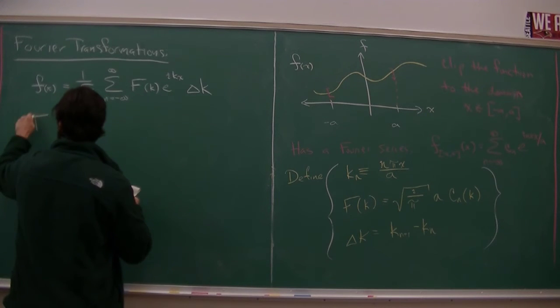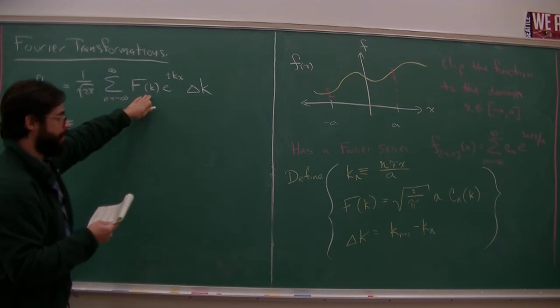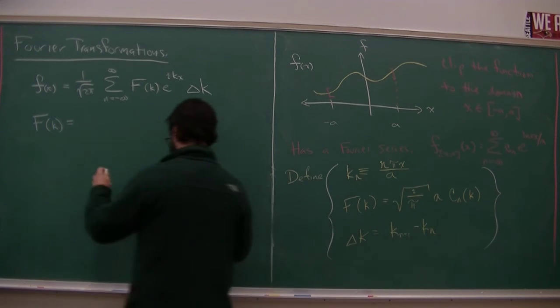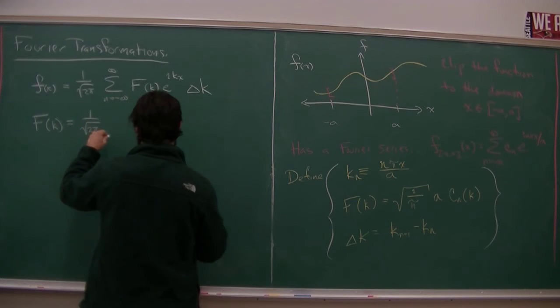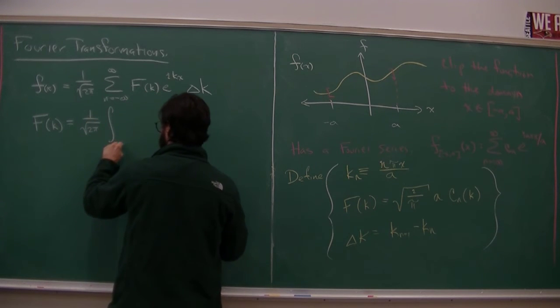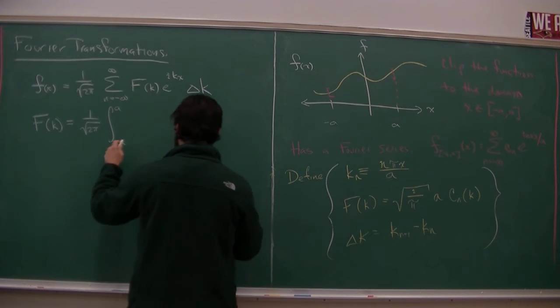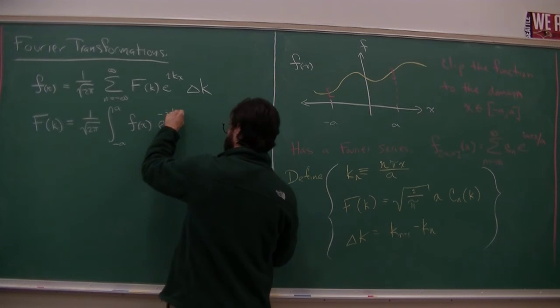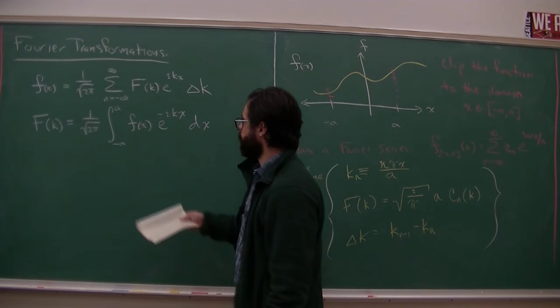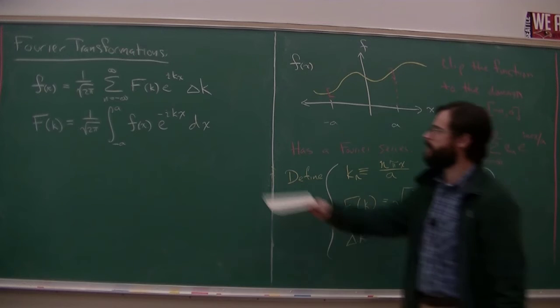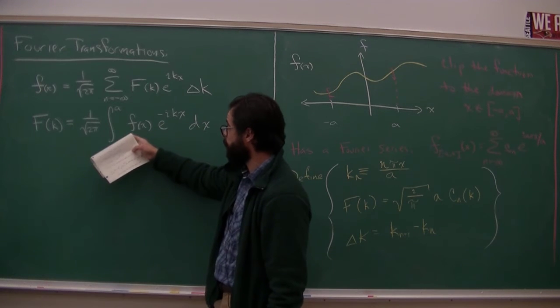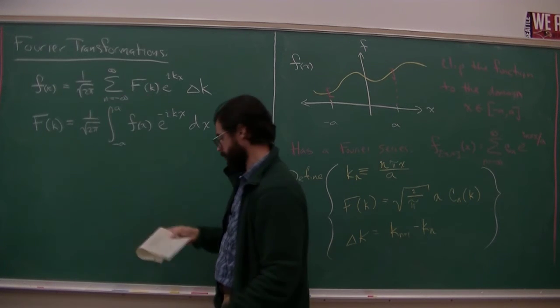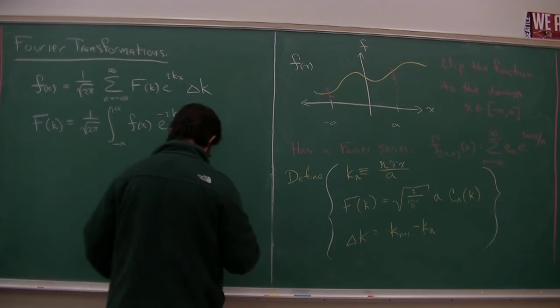And then you can ask, how do we determine f of k? Because f of k has the old Fourier series coefficient in it. Well, you can determine f of k with just the Fourier series coefficient determining formula of the overlap between that basis function, e to the i kx, and the function itself. So again, this is nothing new. This is just rephrasing stuff in terms of these new variables. But these new variables are very suggestive. This we already basically have. This is the Fourier transform. This is how you get the coefficients. The question then is, how do I turn this into an actual integral?